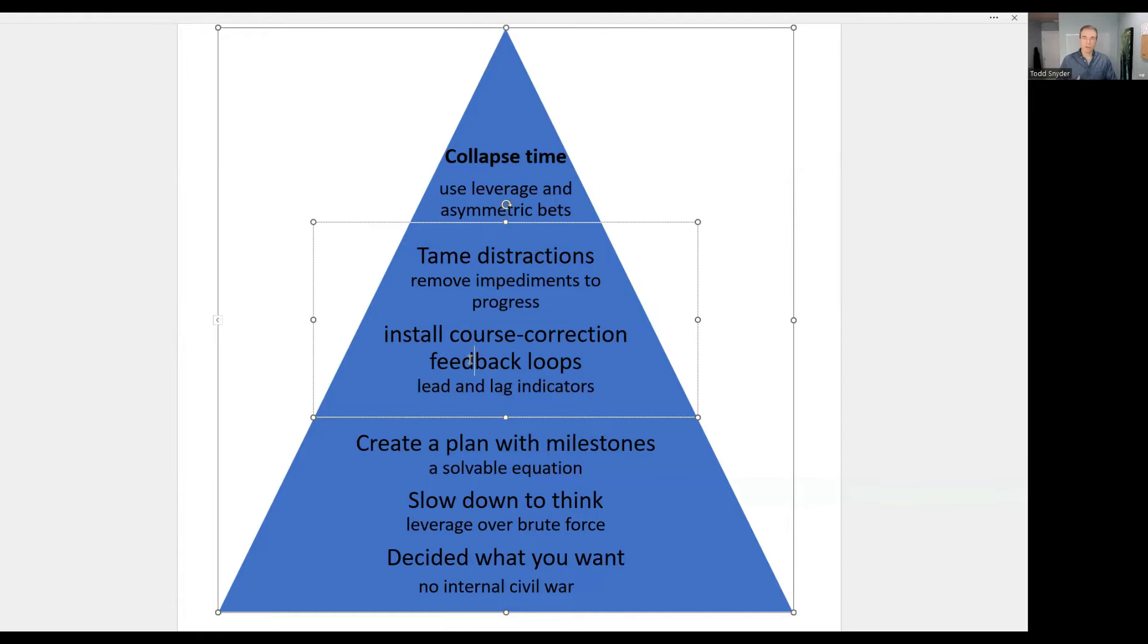It gives you the rolling snowball effect that allows you to then use that cash flow or that team efficiency you've built to then unlock the next level of efficiency, which then unlocks the next level. If you're just always splitting your attention across 16 things and nothing ever gets finished, then you need a course correction feedback loop to help you finish one thing.